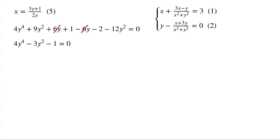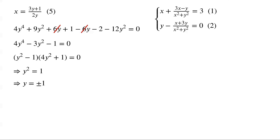The left-hand side can be factorized as (y squared minus 1)·(4y squared plus 1) equals 0. Since 4y squared plus 1 is always greater than or equal to 1, y squared minus 1 must equal 0. Therefore y squared equals 1, so y equals plus or minus 1. Substituting y equals plus or minus 1 into equation 5, we get x equals 2 or x equals 1.